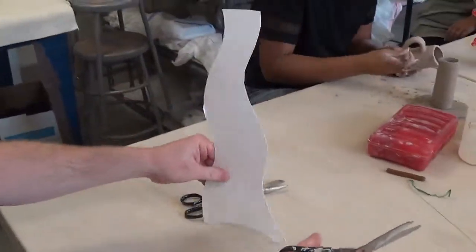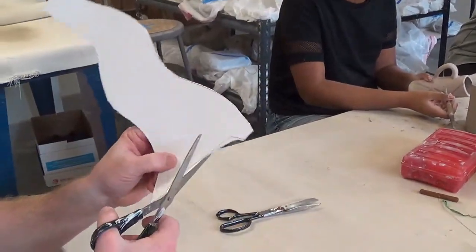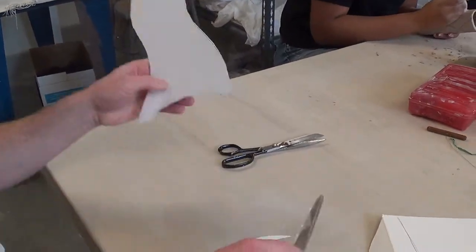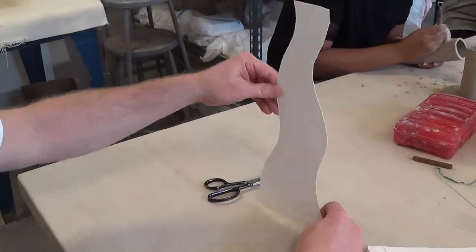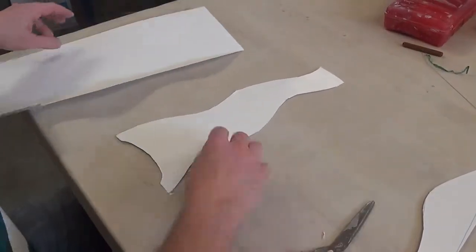Basically what we're doing is designing with paper before we design with clay, so I could experiment, I could make mistakes, I could crumple it up and throw it away and start over. Now I haven't wasted any clay or that much time. Okay, so there's my basic shape.